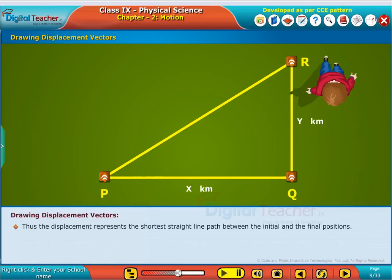Thus, the displacement represents the shortest straight line path between the initial and the final positions.